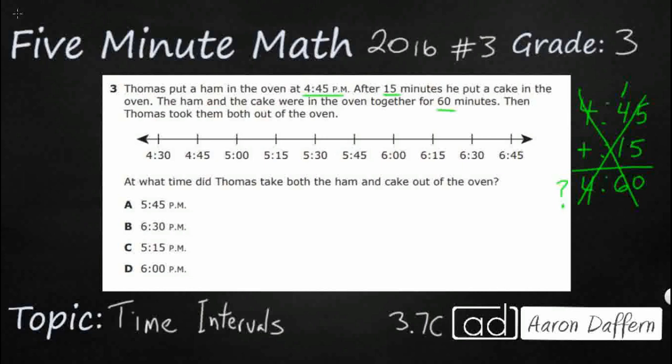So our number system is what we call base 10. So every single time that you hit 10 of one number, you go to the next place value. Well, we don't necessarily go by 10s when we're dealing with our hours and our minutes. Typically, we'll go by 60, 60 seconds in a minute, 60 minutes an hour. And then we'll even go by 24. We'll say 24 hours in a day. And then we'll say 365 days a year. You see how it's all different. So that's why we have to add using a tool.